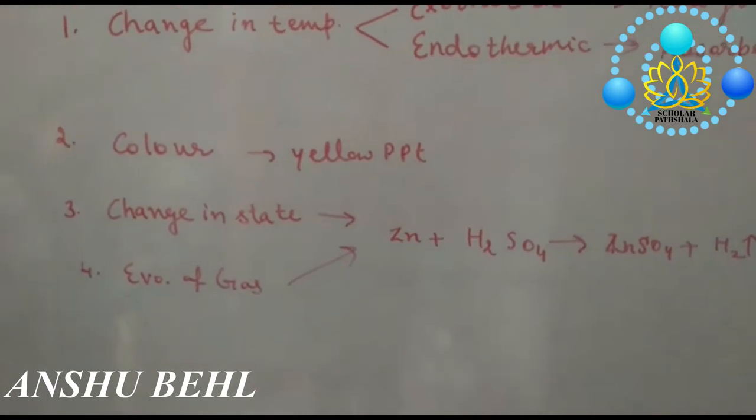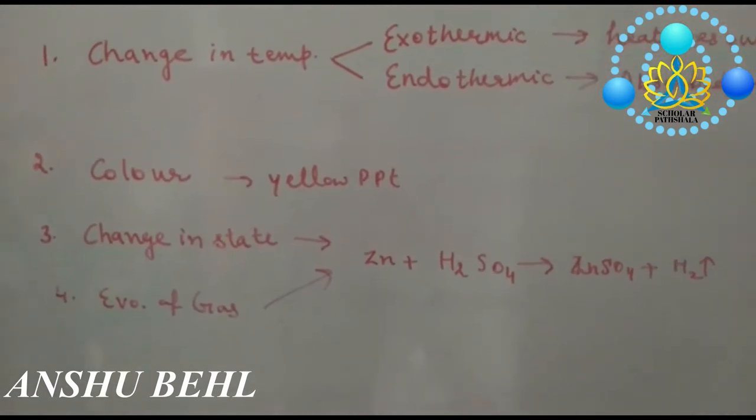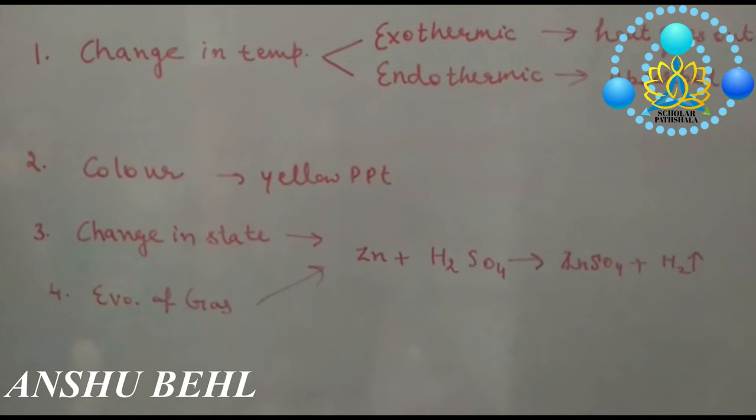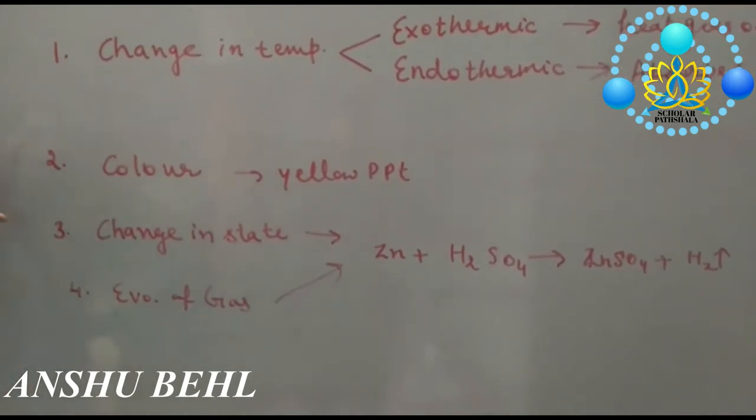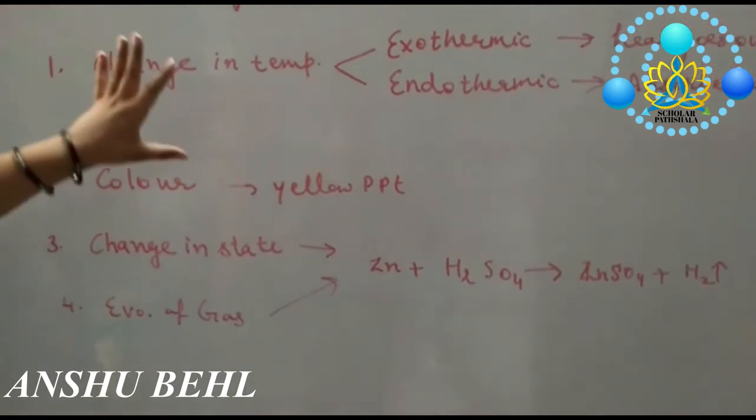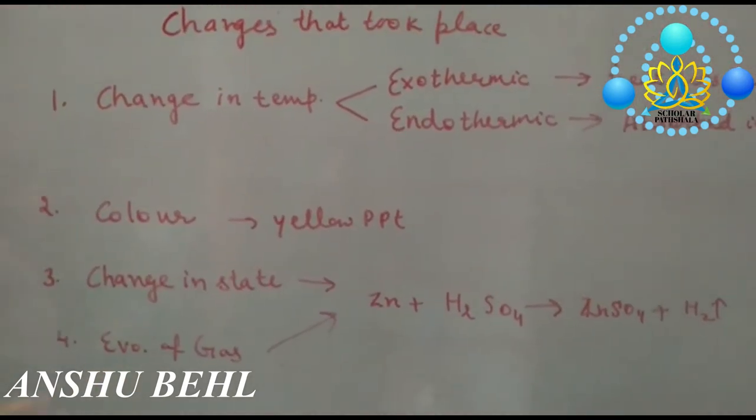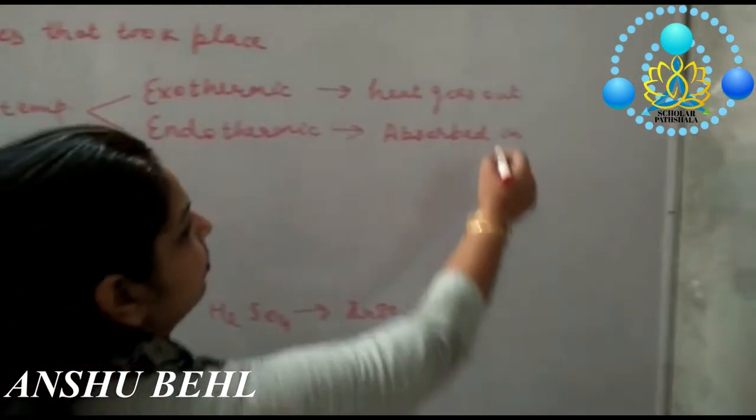These are the major changes taking place when a chemical reaction occurs. Physical state may change, evolution of gas can be there, color may change, or temperature may change when reaction is taking place.